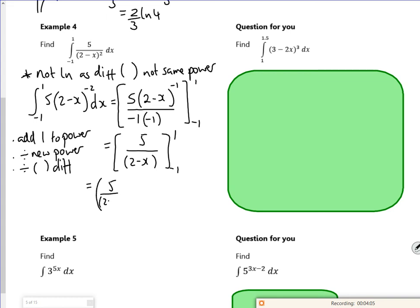So I put my values in, so I put my 1 in there, and then put minus 1 in there, so it's upper minus lower. So I've got 5 over 1 is 5 minus 5 over 3. 5 is 15 over 3, so I've got 15 over 3 minus 5 over 3, I've got 10 over 3.